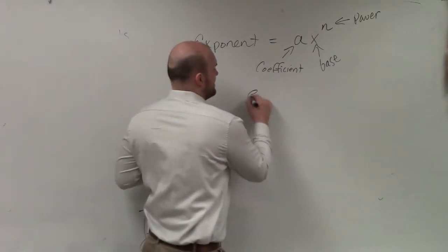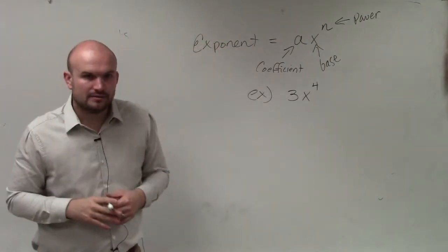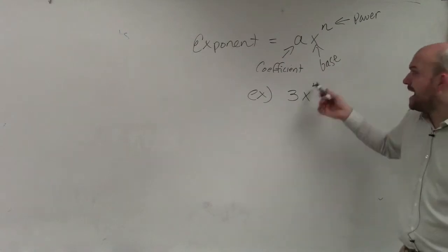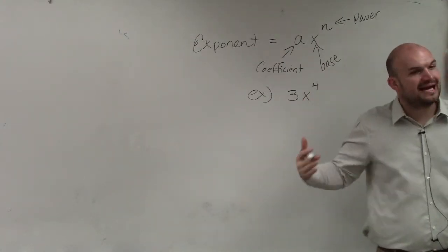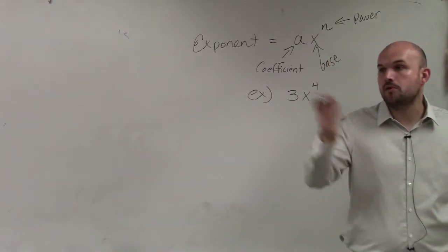So in my example, if I had 3x to the fourth, we could say that the base is three and the power is four. That means I'm multiplying x by itself four times and then multiplying that by three.